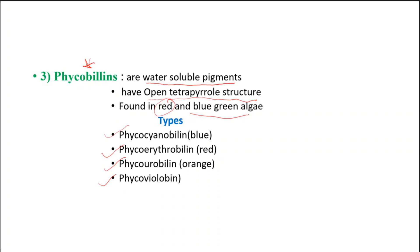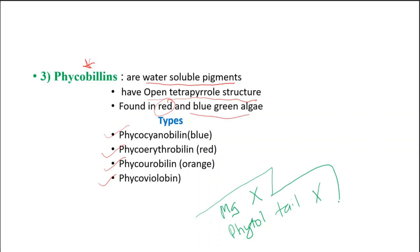One more thing to note about phycobillins: if you compare the phycobillins structure to the chlorophyll structure, in chlorophyll there is magnesium in the center, but in phycobillins there is no magnesium atom present. Second, in chlorophyll we had a phytol tail, but here the phytol tail is absent. So the differences between phycobillins and chlorophyll are: phycobillins are water-soluble, their chain is an open tetrapyrrole, there is no magnesium present, and there is no phytol tail.